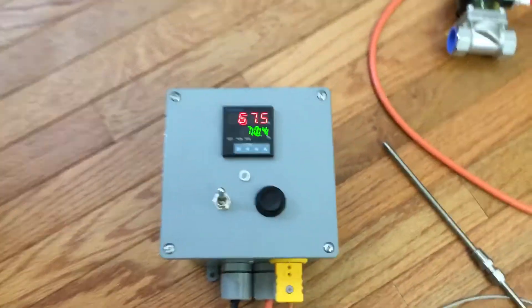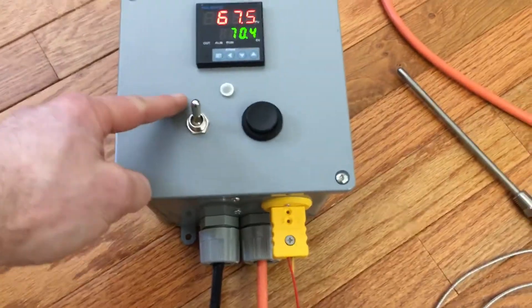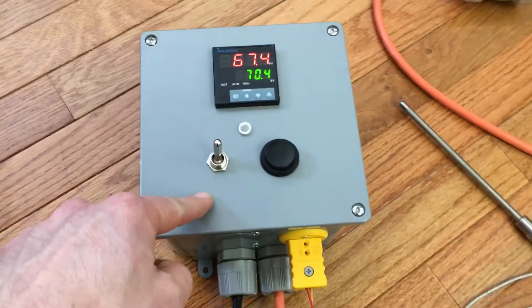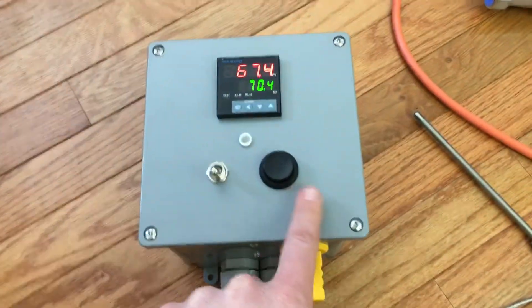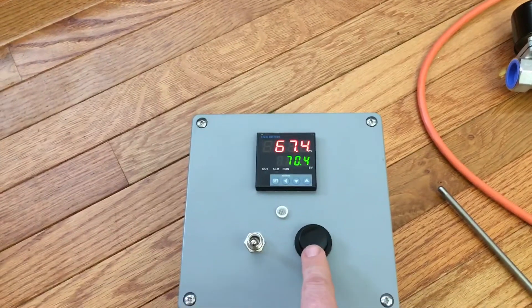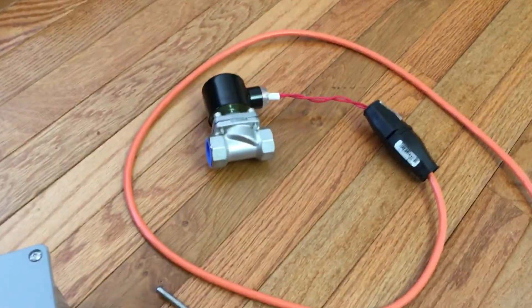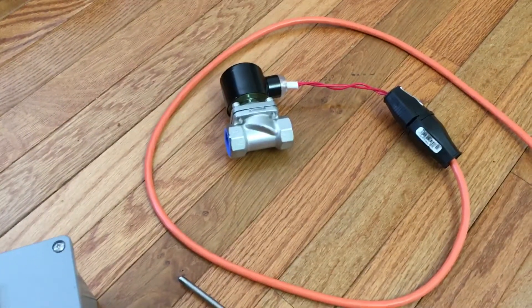The controller has auto and manual modes. When you go to manual you push this button and you can hear the solenoid valve click on and off.